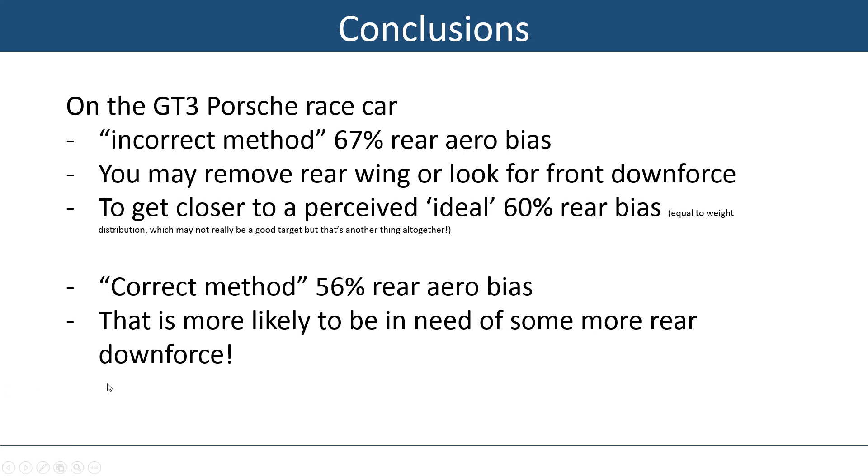On the GT3 Porsche car, we saw that using the incorrect method, as I call it now, resulted in a 67% rear bias. If you get that on your Porsche Cup, it's probably fairly well sorted. But you might think, well, I need to be looking for a bit more front downforce, or even reduce some rear downforce to get that aero bias to be a bit closer to the weight distribution of the car, which is not necessarily a good target, but sort of probably a reasonable target to begin with. If you use the incorrect method, you might reduce rear downforce or you want to add front downforce. If you compensate for this drag moment weight transfer thing, you would actually get 56% rear aero, which is probably fine, but if anything you would like to add some more rear downforce. So the goals from adjusting the car in the wind tunnel will be the opposite, depending if you correct for the drag moment or not.